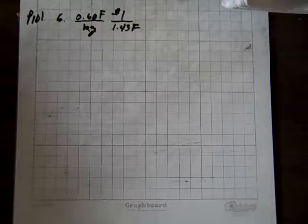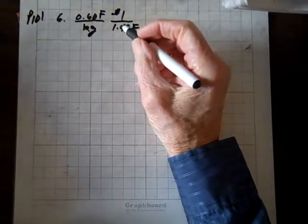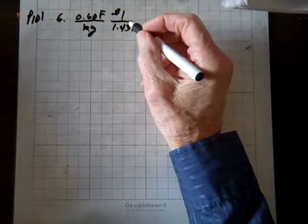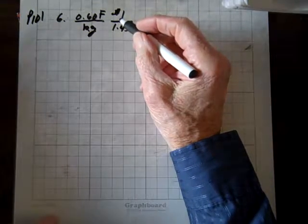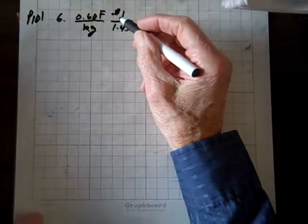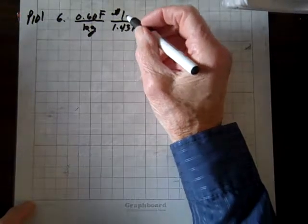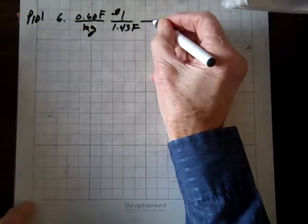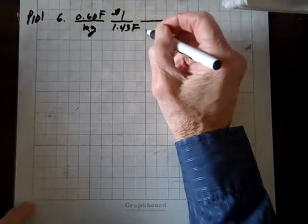Now we're doing question 6 on 2B, the worksheet. We're told that there's 0.6 francs per kilogram for onions, that's the cost. A dollar's worth 1.43 francs, so we need to know what the cost is in dollars per pound.